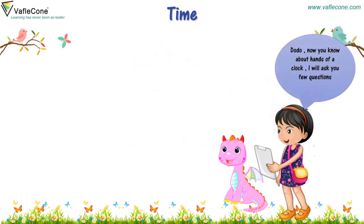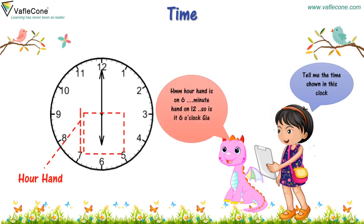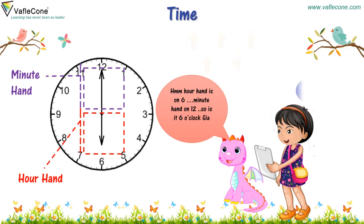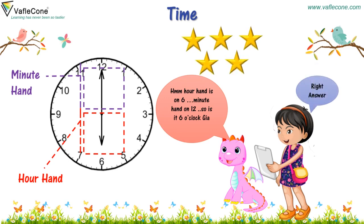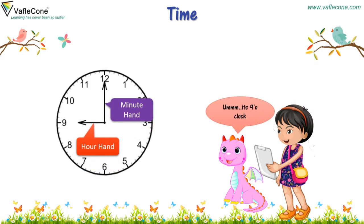Dodo, now you know about the hands of a clock. I will ask you a few questions. Go ahead. Tell me the time shown in this clock. The hour hand is on 6, minute hand on 12. So it is 6 o'clock, Jia. Right answer. What time is showing in this clock? It's 9 o'clock. Right answer.